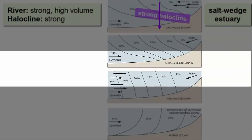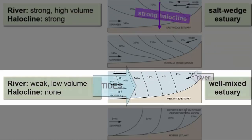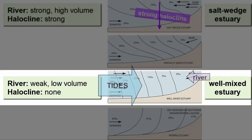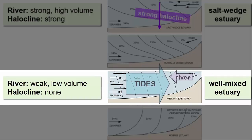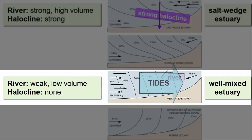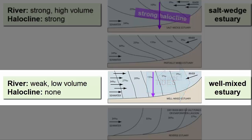The opposite of that is a well-mixed estuary, where weak, low-volume rivers enter the ocean and the tides overwhelm and simply absorb that water in increasing amounts. The surface water and deep water are the same, so there is no halocline.